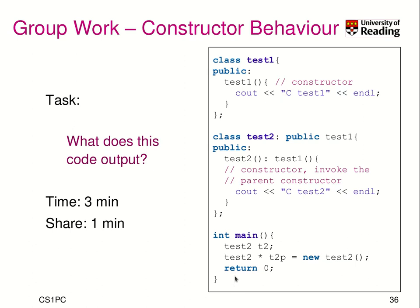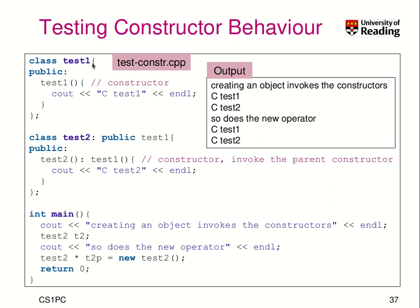Hope you have paused the video. Here is the resolution. What it prints is ctest1 and then ctest2, because a test2 object is a test1 object. Class test2 inherits from test1 and calls the constructor of the base class first. In this case the base class is test1, which doesn't have any further base class. That's why the first message we see is ctest1. Afterwards we execute the body of the test2 constructor, which prints ctest2. We see the same messages when we create it on the heap using the new keyword.